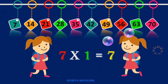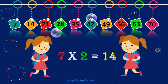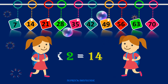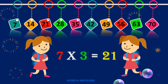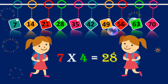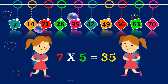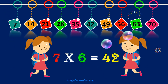Seven ones are seven, seven ones are seven. Seven twos are fourteen, seven twos are fourteen. Seven threes are twenty-one, seven threes are twenty-one. Seven fours are twenty-eight, seven fours are twenty-eight. Seven fives are thirty-five.